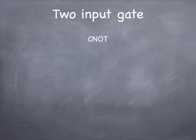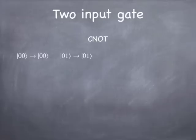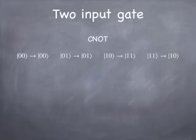The only 2-input gate we need for today's lesson is the Controlled NOT, or CNOT. The CNOT takes |0,0⟩ to |0,0⟩ — if the first qubit is 0, the second qubit is unchanged, so |0,1⟩ goes to |0,1⟩ as well. But if the first qubit is 1, the second qubit is inverted. The first qubit is the control bit; the second qubit is the target bit. If the control bit is 0, nothing happens to the target. If the control bit is 1, the target gets inverted.